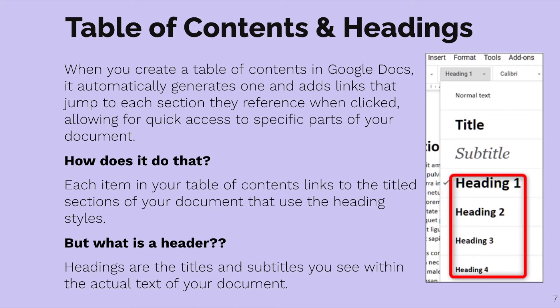When you create a table of contents in Google Docs, it automatically generates one and adds links that jump to each section when clicked, allowing quick access to specific parts of your document. It links to title sections of your document that use heading styles. A header is the title and subtitles you see within the actual text of your document, and you can decide what text uses those styles and also change their look.